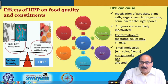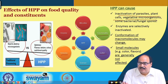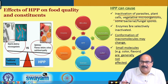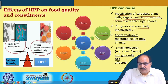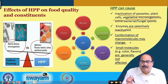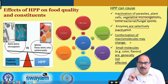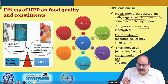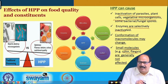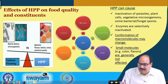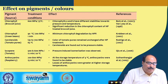High pressure processing can cause inactivation of parasites, vegetative microorganisms, spores of bacteria or fungi, and even enzymes are selectively inactivated. Conformation of macromolecules may change during high pressure processing depending upon the process conditions, particularly pressure and other factors. Small molecules, however, such as colour and flavour, are generally not affected — they remain unaffected or less affected.